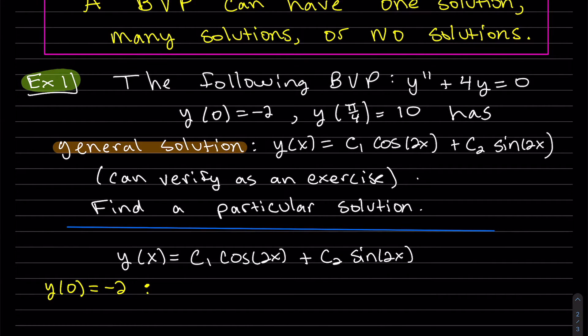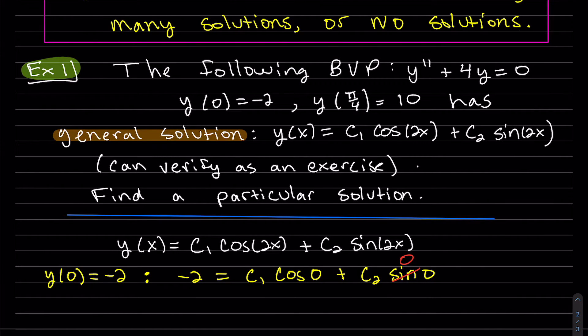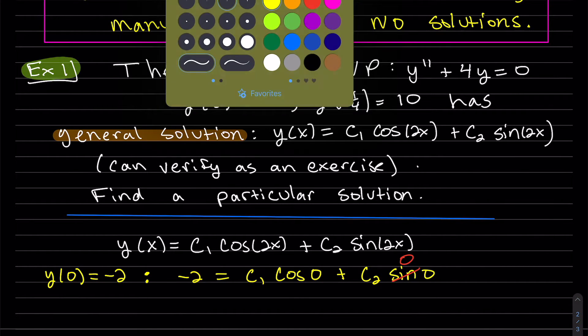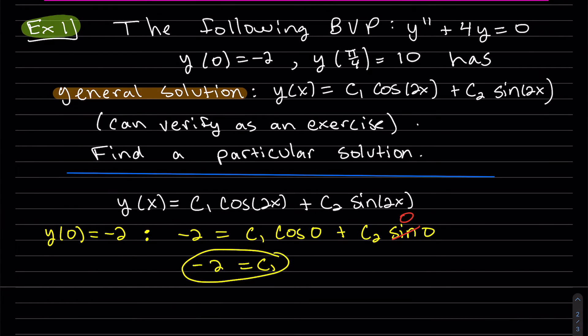So plugging in our first one, the y is negative two. This goes to zero. So we get and our second condition.